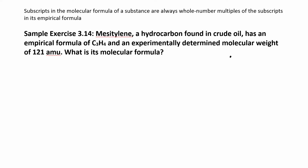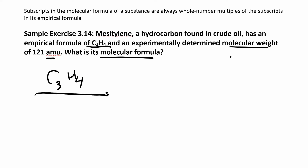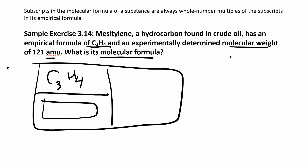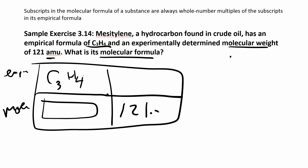In this problem, they give you an empirical formula — let's say the empirical formula is C3H4 — and they want to know what the molecular formula is given the molecular weight. I'm going to make a little box here to keep us organized, with empirical information on top and molecular on the bottom. The molecular is always going to be bigger than the empirical because the empirical is the simplest one.